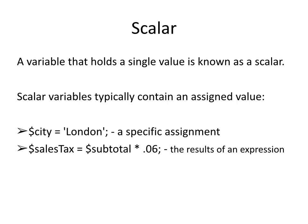PHP variables are also sometimes referred to as scalar variables. A scalar is simply a variable that holds a single value. Values can be assigned as literals, such as in the first example where the variable city has been given the value of London. Or, scalar variables may receive their value as the result of an expression, such as in the second example where the variable's value of subtotal is multiplied by 0.06.